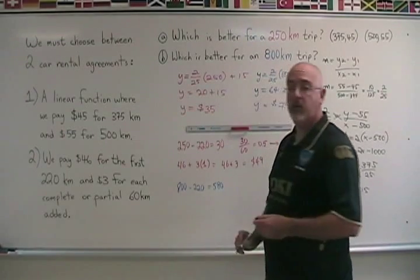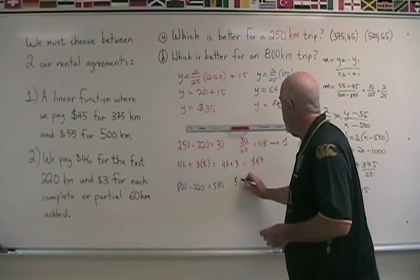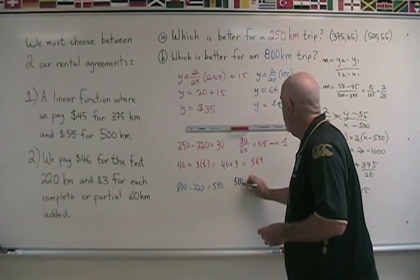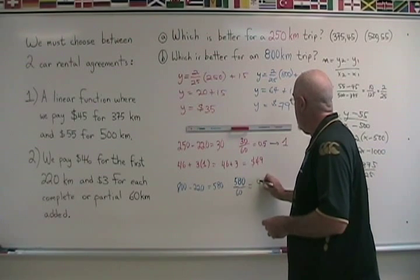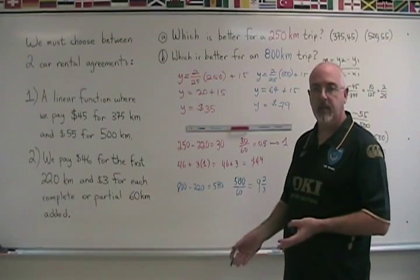So we are traveling an extra 580 kilometers, and then 580 divided by 60 gives me 9 and 2 thirds times the extra 60 kilometers.